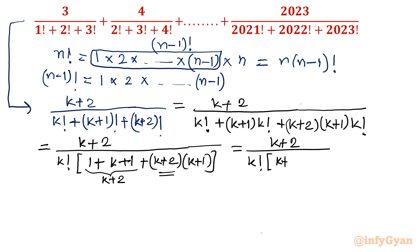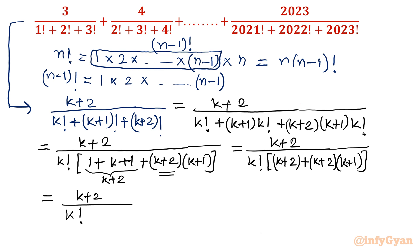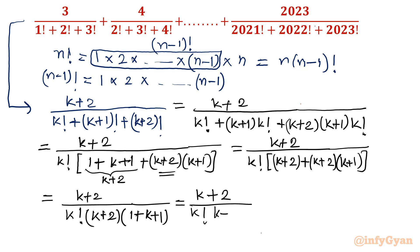So I will write (k+2) divided by k!, in bracket: (k+2) + (k+2)(k+1). In the next step I take (k+2) common from the bracket, leaving 1 + (k+1). So it becomes (k+2) divided by [k! × (k+2) × (k+2)]. I can cancel one factor of (k+2), leaving 1 over [k! × (k+2)].